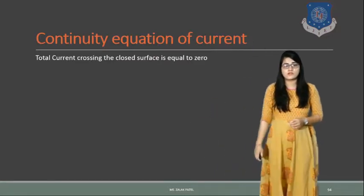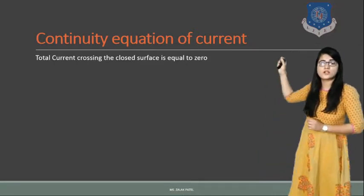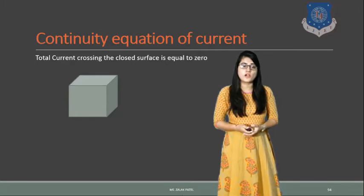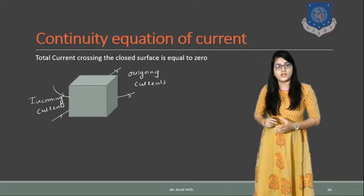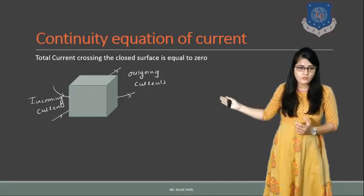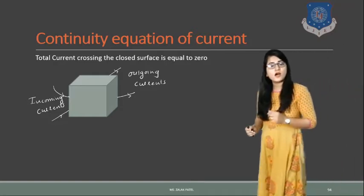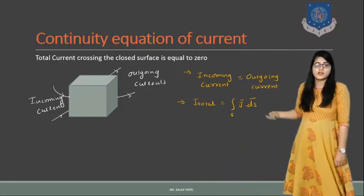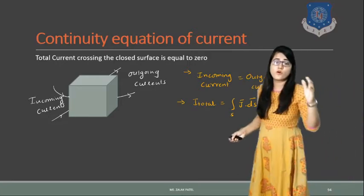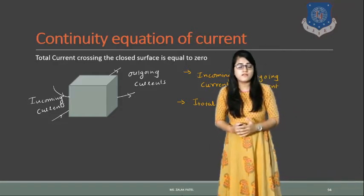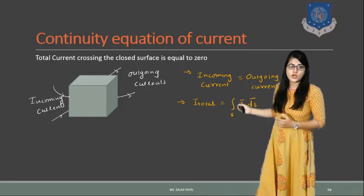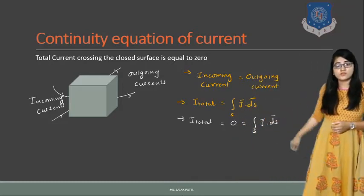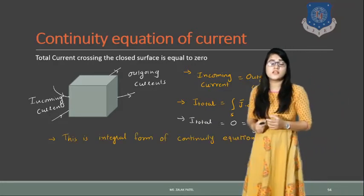The fifth equation is the continuity equation of current. According to its statement, the total current crossing the closed surface is equal to 0, meaning whatever current comes in equals the outgoing current — similar to KCL. Since incoming current equals outgoing current, the algebraic sum is 0. Current density J equals current upon area, so total current equals the surface integration of J dS. Comparing, surface integration of J dS equals 0. This is the integral form of the continuity equation of current.